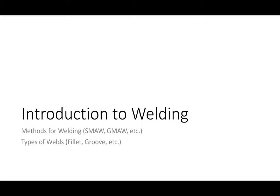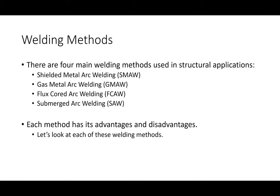I want to talk about the different methods for welding. I'm going to use terms like SMAW and GMAW — you probably haven't heard those, but I'll relate them to terms you have heard. There are four main welding methods we use in structural applications — buildings, bridges, large-scale structural steel. TIG welding, for example, is common but not something we'll discuss, because TIG welding is for precision-style fabrication like automotive or bicycles — not buildings and bridges.